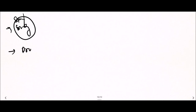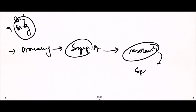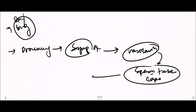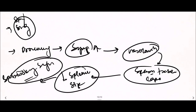In drowning, sympathetic stimulation causes vasoconstriction, leading to spasm of the splenic trabeculae and capsule. This results in a decreased splenic size, known as Savinsky's sign — a decrease in spleen size due to increased sympathetic stimulation in drowning.